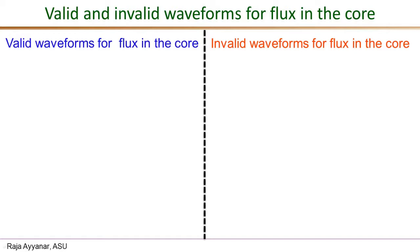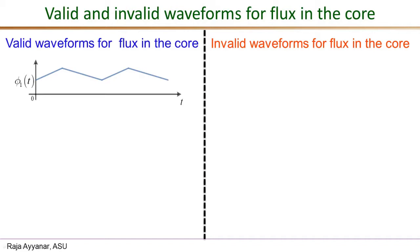Let me show some valid and invalid waveforms for flux in the core. Waveforms on the left are valid for steady-state operation of isolated converters. The first is a piecewise linear waveform — the same as an inductor current waveform seen in non-isolated converters. This is a valid flux waveform: the voltage creating it is a finite positive value when flux is rising and a finite negative value when falling, never infinite.